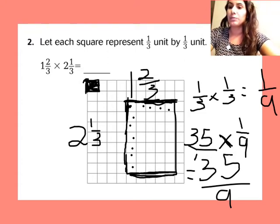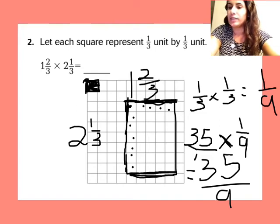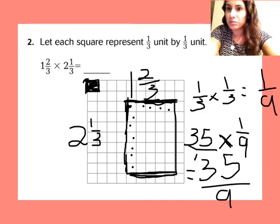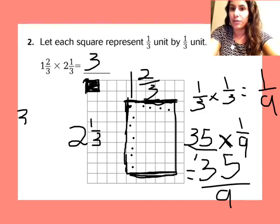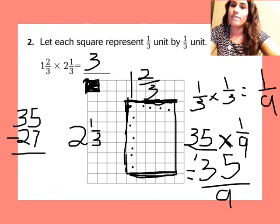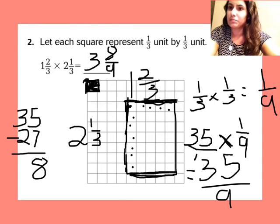So now I need to change that to a mixed number. I know that nine times three is 27, so I'm going to use that. I'm going to make three wholes, and then I have to do 35 minus 27. So I'm going to have eight left over, over nine. So my answer is three and eight-ninths.